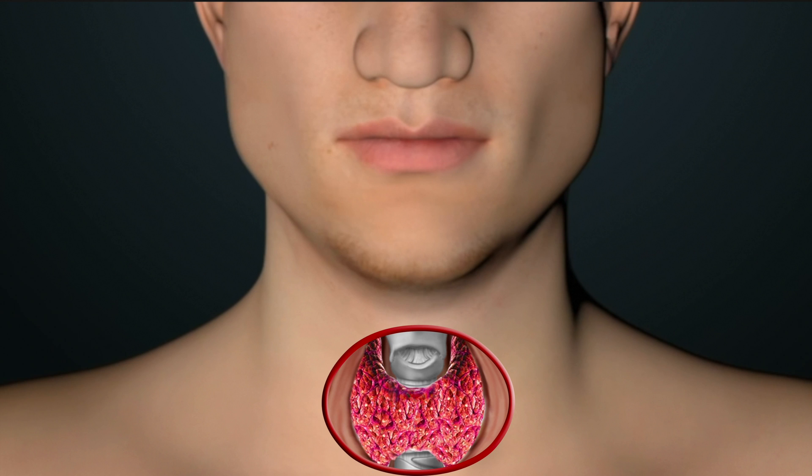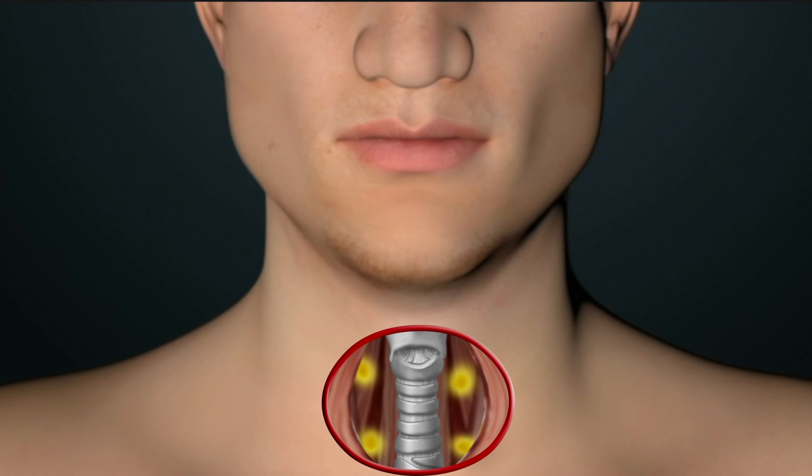If necessary, the same procedure may be performed on the opposite side to find the problematic parathyroid gland. There are uncommon situations in which two or more parathyroid glands need to be removed, but this typically is not known before surgery.